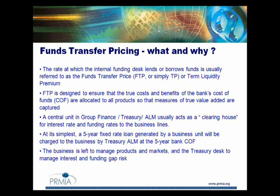At its simplest, a five-year fixed-rate loan generated by a business unit will be charged to the business by Treasury ALM at a five-year bank cost of funds. But that assumes I'm match funding. I don't match fund because that's not what banking is. So instead, logically, I should be passing on the term liquidity premium - how much extra it costs to raise five-year liquidity if I needed to - not the five-year cost of funds. Here's something to think about: if I was operating in the match funding regime and always passed on the cost of funds for whatever tenor the asset was, by definition a bank would only ever be able to lend money to someone who has a worse credit risk or a worse funding rate than it.